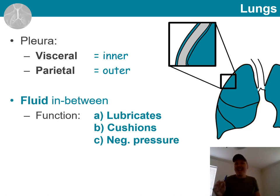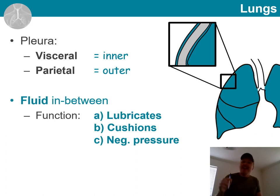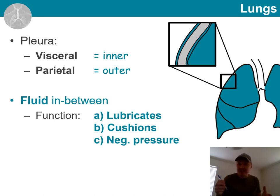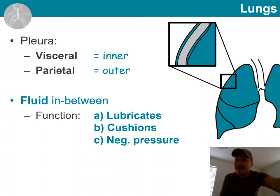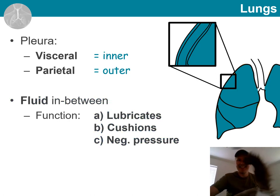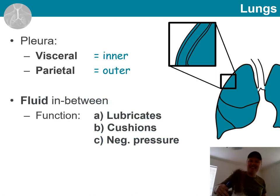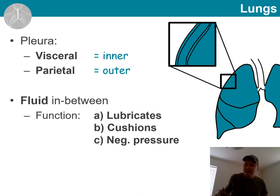This fluid helps to lubricate the sliding of these two layers against each other. It also cushions the whole structure. And finally, it helps to generate a negative pressure that causes the lungs to expand. Those are a few important points about the pleura around the lung.